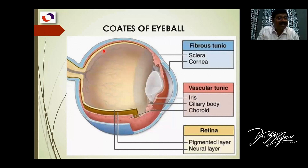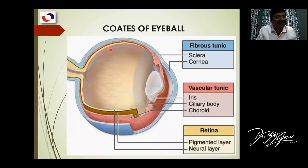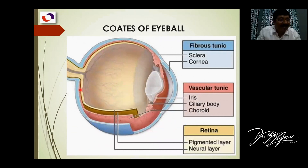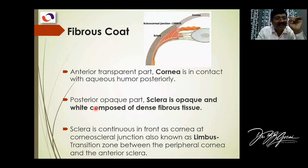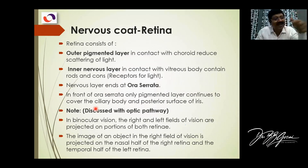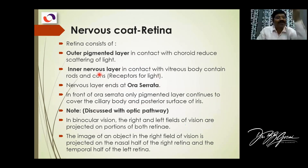Towards the vitreous humor, we find the axons of the last chain of neurons, which then form the optic nerve. So light passes through, goes up to the pigment layer, reflects back from the pigment layer, and then stimulates the cells in the optic pathway. The photoreceptors — known as rods and cones — are contained in the inner part. Physiologists will explain the whole mechanism of vision.